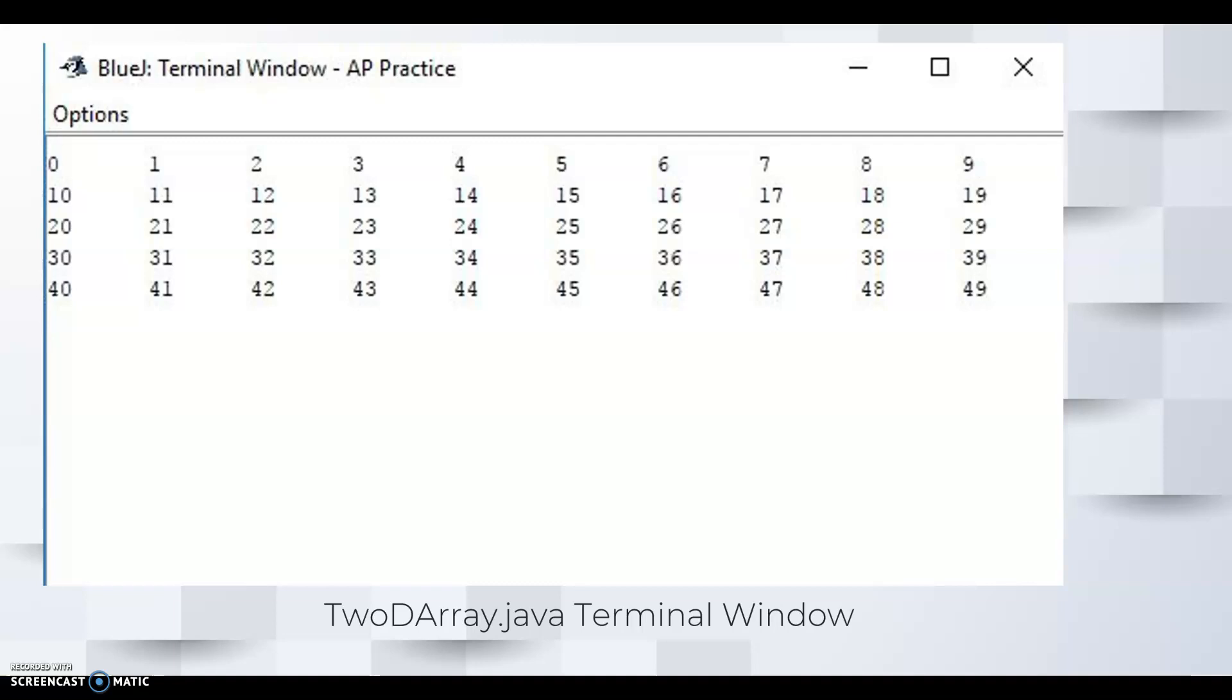Here is the output of the two-dimensional array. The combination of print and the escape sequence T allows the printout to be in multiple columns.